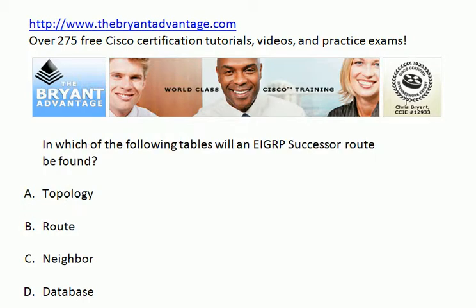In which of these tables will an EIGRP successor route be found? We need to know what an EIGRP successor route is, but we also have to know where to find it or them.